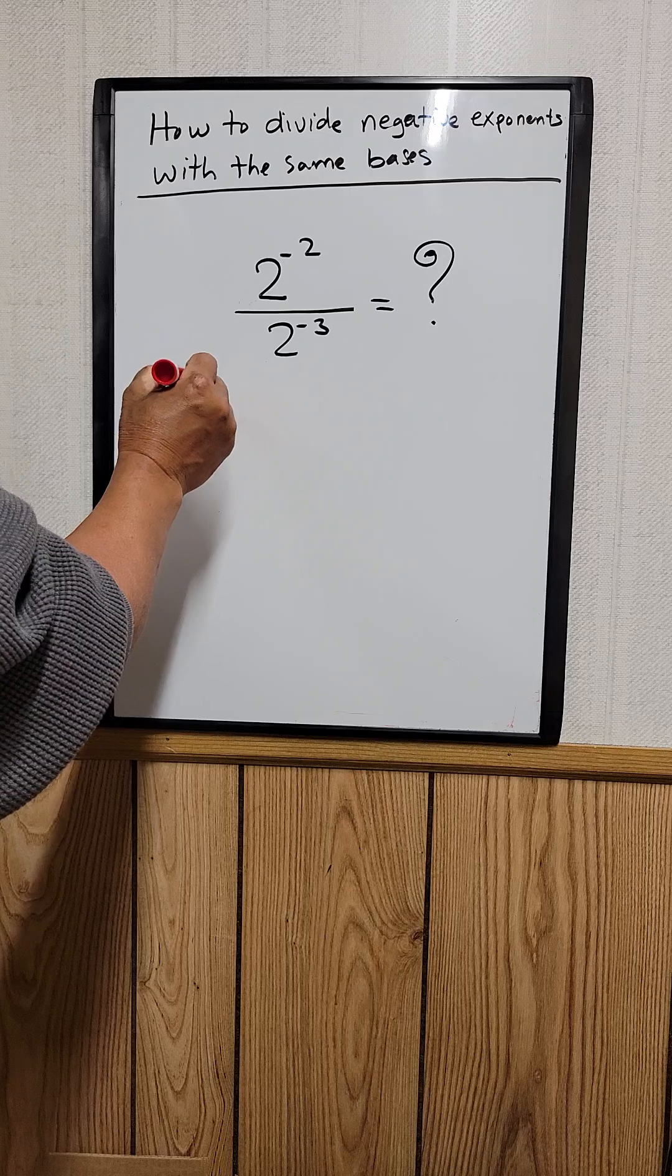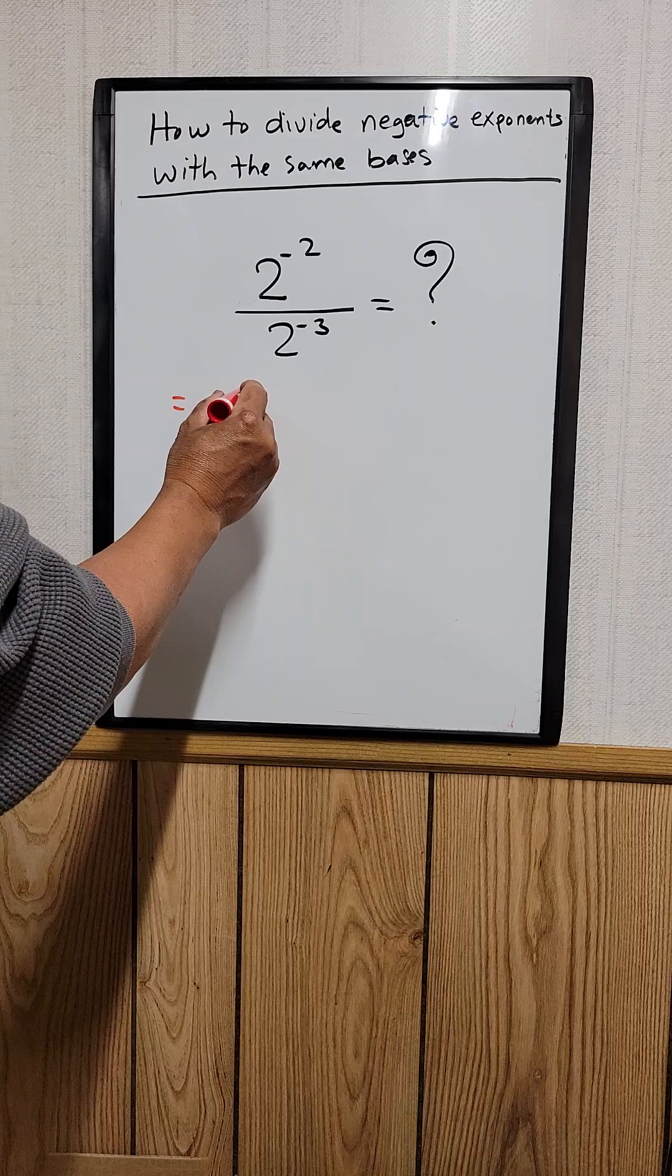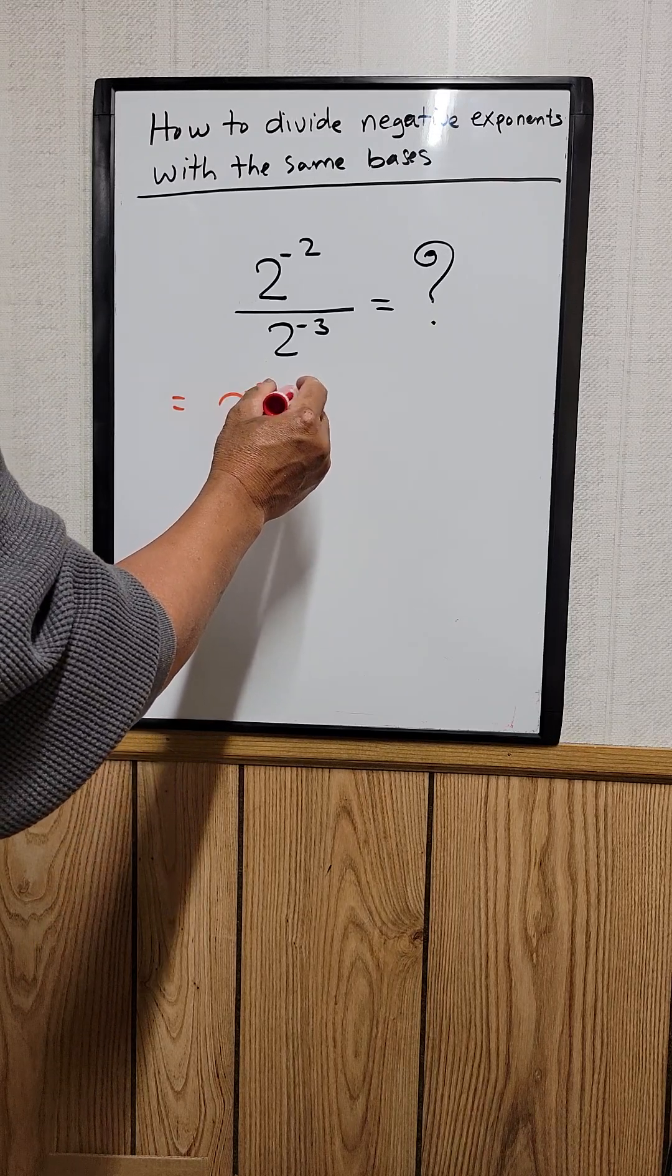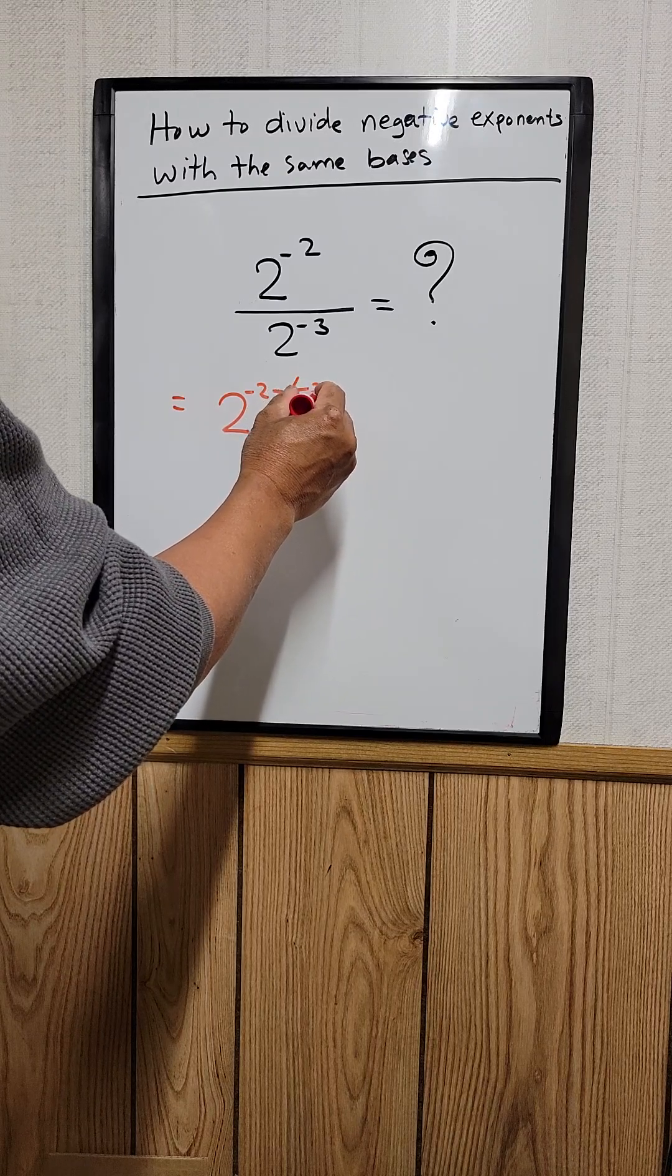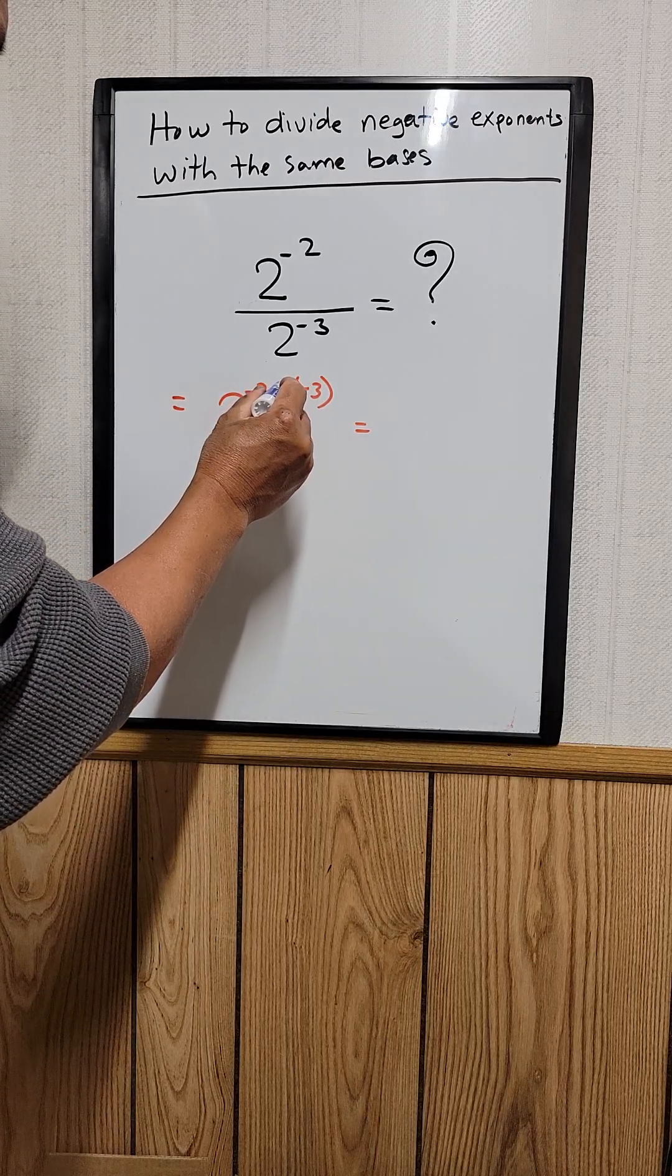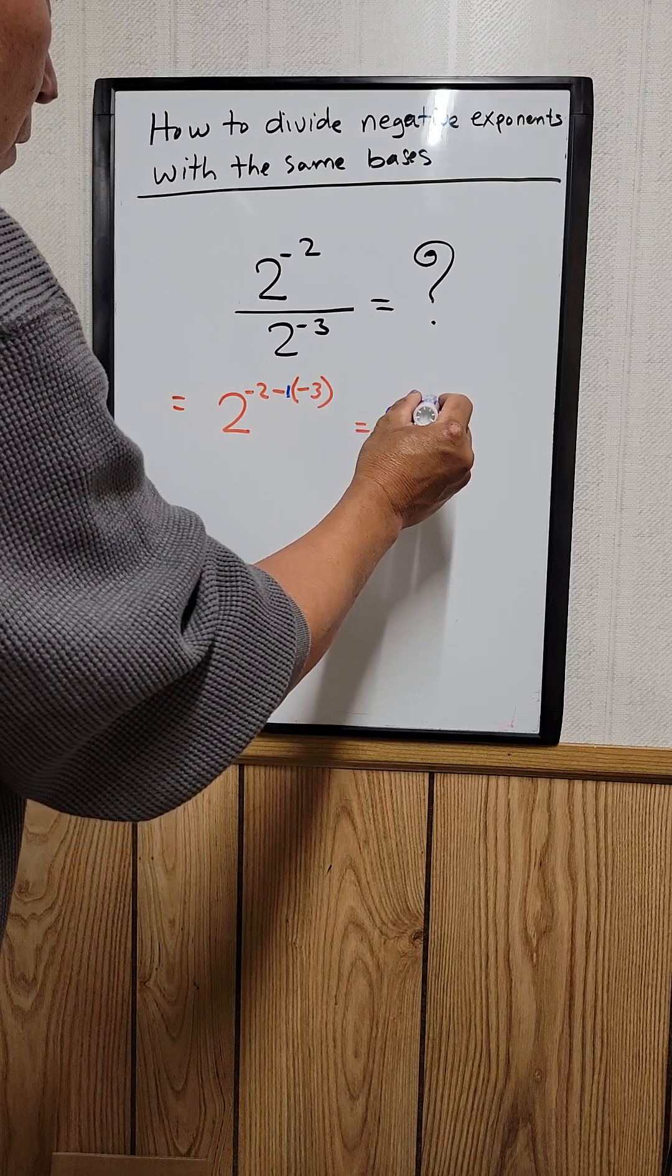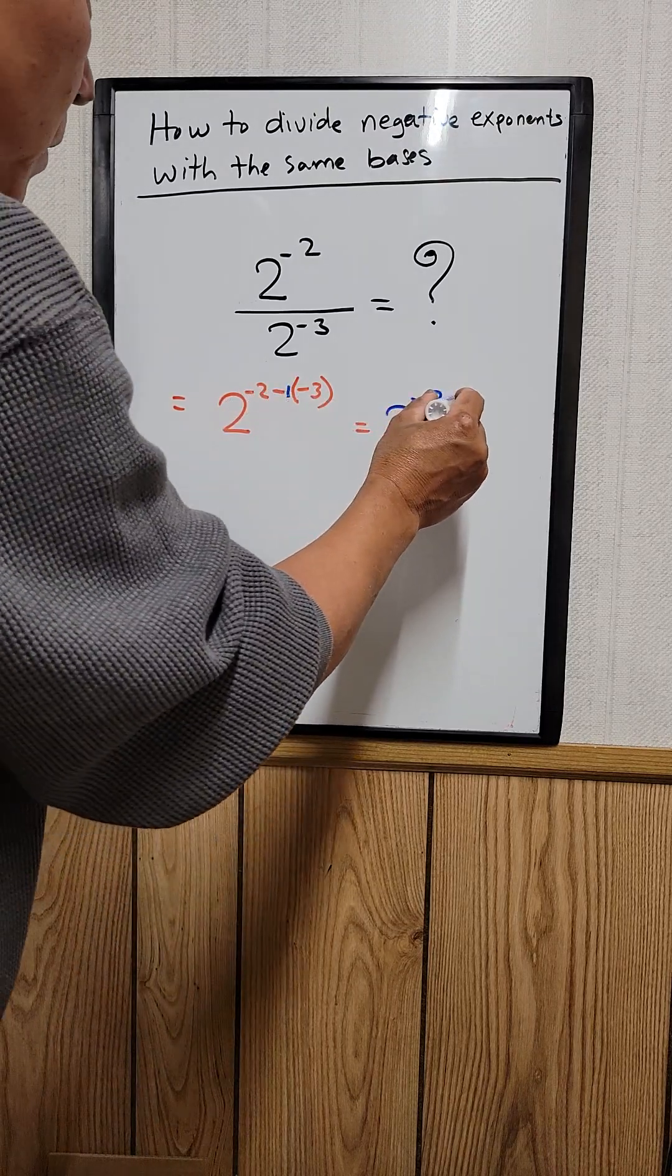So we can rewrite this as 2 to the negative 2 minus negative 3. That's equal to 2 to the negative 2 minus negative 3. So negative 1 times negative 3 would be plus 3.